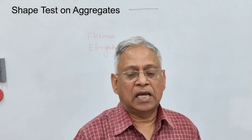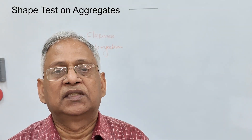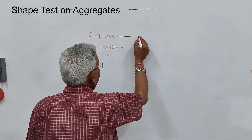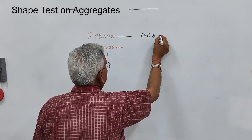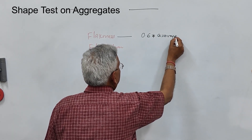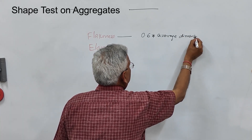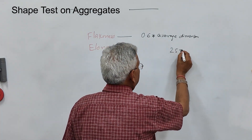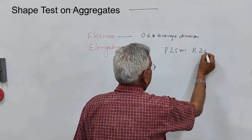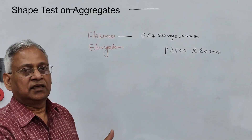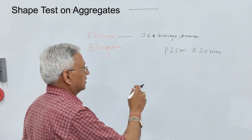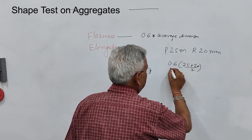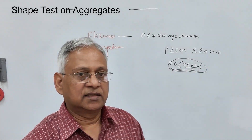Flakiness index indicates the minimum dimension of an aggregate. A particle is said to be flaky if its minimum dimension (thickness) is less than 0.6 times the average size of the aggregate. For example, if the aggregate is passing 25 mm and retained on 20 mm, and a particle's thickness is less than 0.6 times (25+20)/2, then it is said to be a flaky particle.